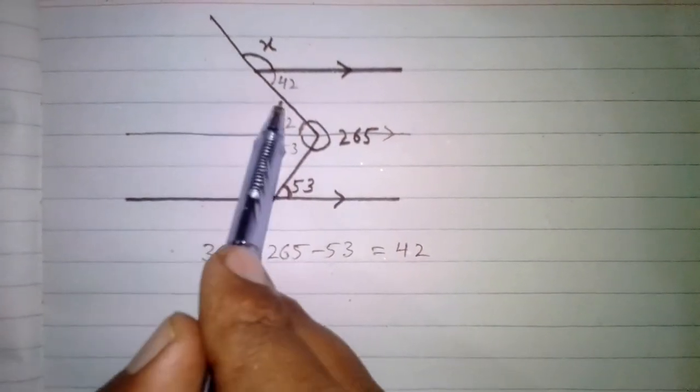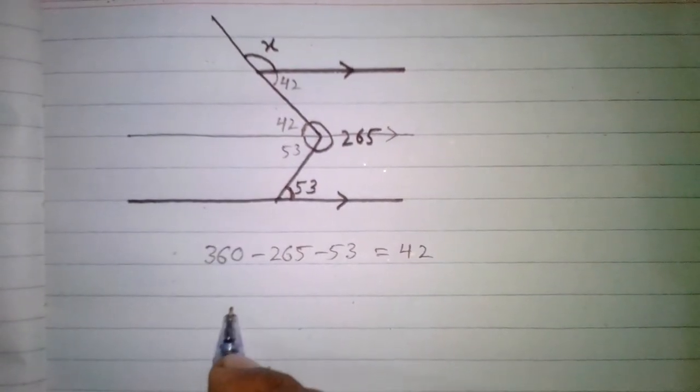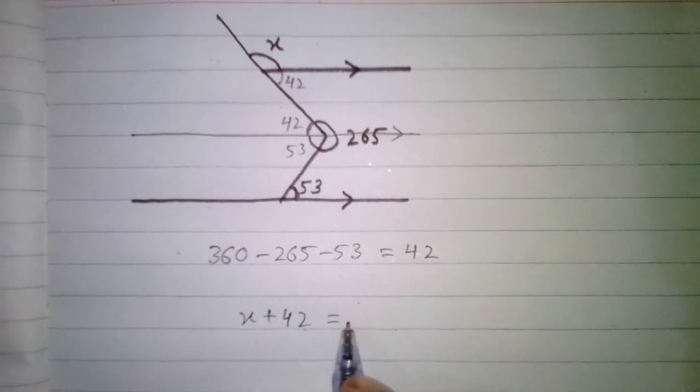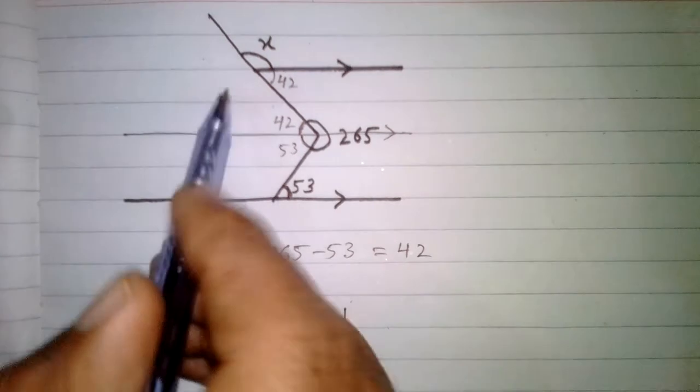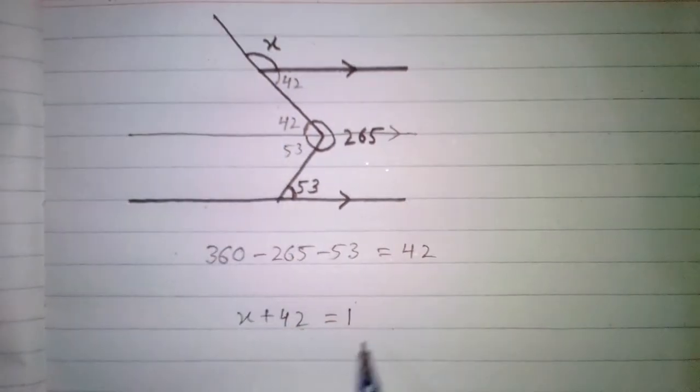We have a straight line and the sum of angles on a straight line is 180, so X plus 42 is equal to 180.